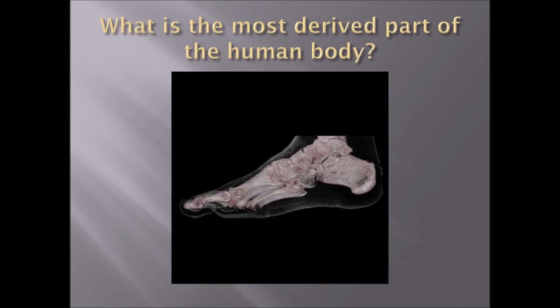All other living primates walk on all fours — they can step up onto two feet, but they don't do it efficiently. We can climb a tree, but we don't do that efficiently either. If you don't believe me, try racing a chimpanzee up a tree — you won't even get started before they're done. Watch American Ninja Warrior with a chimpanzee competing and suddenly the humans don't look all that impressive. Our most derived feature: the foot.